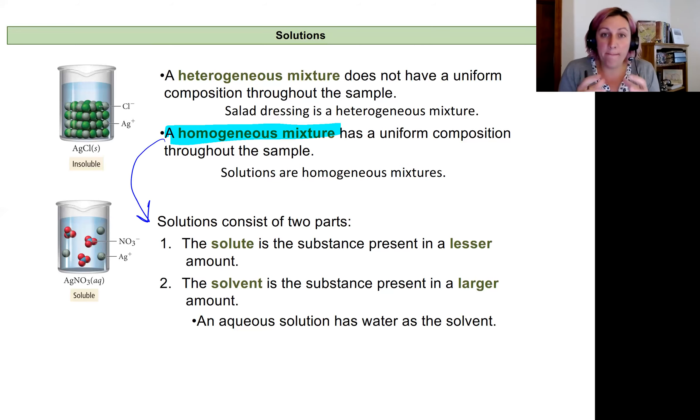Within those homogeneous mixtures, a solution is going to have two parts: the solute and the solvent. The solute is going to be whatever of the two substances that are mixed together you have the least of. So if I put a pinch of salt in a big pot of water before I boil pasta, I have a homogeneous mixture of salt and water, and I have just a tiny bit of salt compared to my big pot of water, so my solute is the salt.